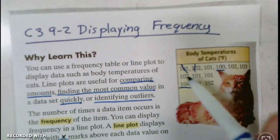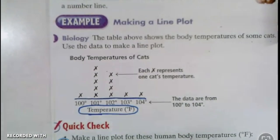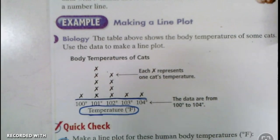That's all they did is they went through, and every time that they saw the number, they drew an x down here. So each x represents one cat's temperature, and they show the range from 100 to 104. That is a line plot.